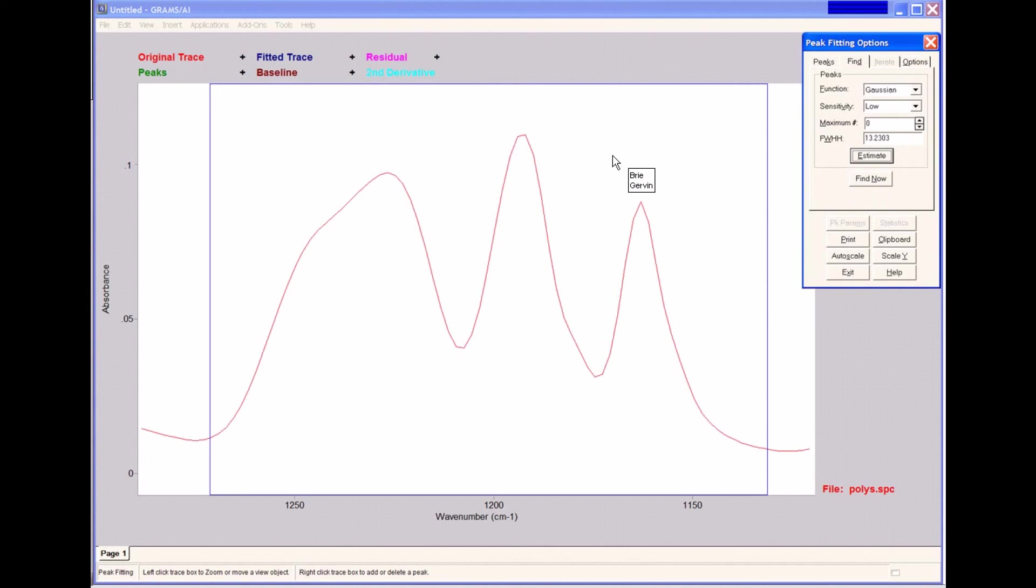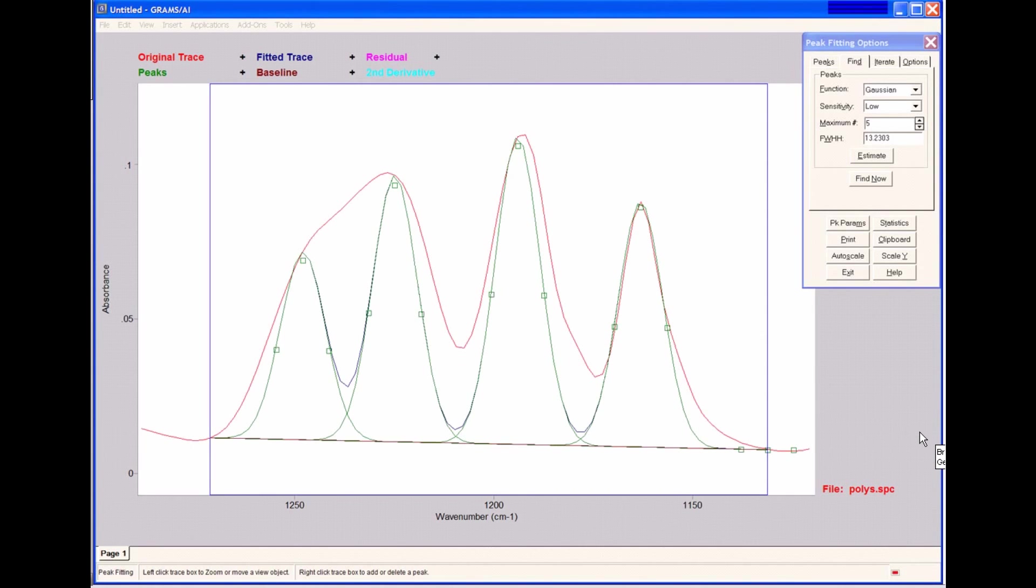I can set the maximum number of peaks defined. I can look at my data here and choose perhaps four or five or even six. For our example, I will choose five for now. I'm going to click find now. So it found five peaks and added those peaks to my view.